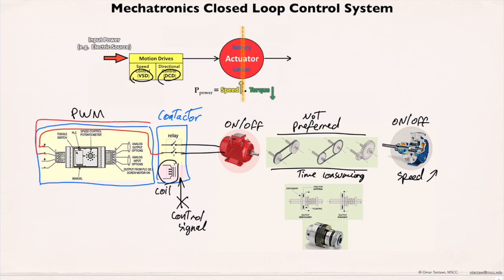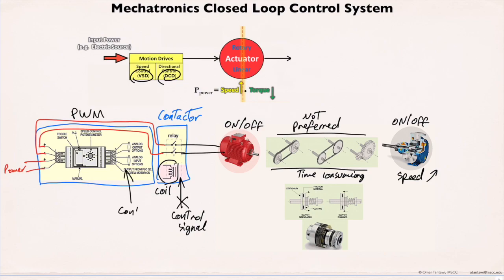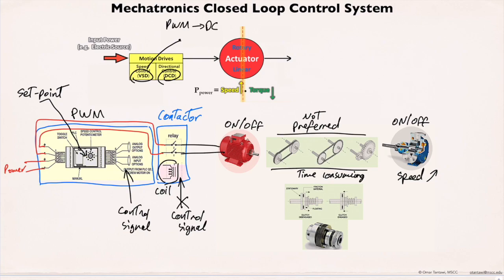A variable speed drive changes the amount of energy only when it receives a control signal, like a speed request signal, from the system controller. Otherwise, the speed is maintained at a certain set point. There are two types of variable speed drives commonly used in industry: a pulse width modulation PWM to control a DC motor, and a variable frequency drive VFD to control an AC motor.